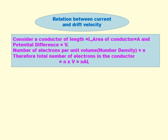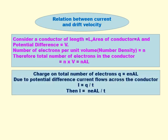Total number of electrons in the conductor equals number of electrons per unit volume multiplied by volume of conductor. Volume = area × length, so total number of electrons = n·A·L. Total charge on these electrons: Q = e × (n·A·L) = e·n·A·L, where e is the charge of electron and n·A·L is the total number of electrons in the conductor.